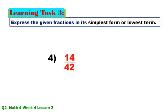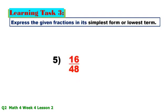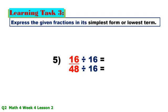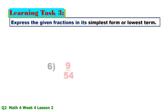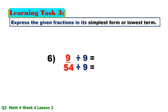Number 4: 42/14 — 42 ÷ 14 = 3, so the answer is 1/3. Number 5: 16/48 — GCF is 16; 16 ÷ 16 = 1. Number 6: 9/54 — GCF is 9; 9 ÷ 9 = 1, 54 ÷ 9 = 6, answer is 1/6.